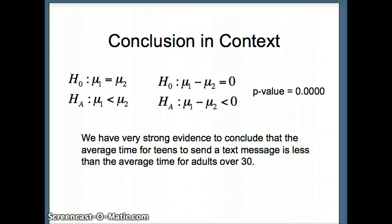We have very strong evidence to conclude that the average time for teens to send a text message is less than the average time for adults over 30. Now is that because teens have more supple fingers or because they're more coordinated? I don't think so. I would say the reason this is likely true is that teens have grown up with text messaging, it's part of their culture, whereas adults are new to the process, so they're typically going to be more slow at doing this. That will conclude this presentation.